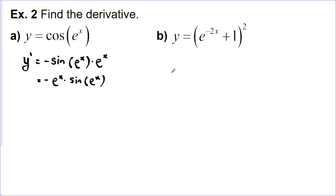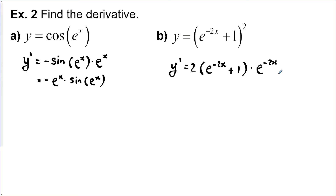This one requires the power rule first: bring the two down, leave everything inside the brackets alone, and reduce the exponent by one. Then take the derivative of the inside: the derivative of e to the negative 2x is e to the negative 2x times the derivative of negative 2x, which is negative 2. We can reorder to get negative 4e to the negative 2x times what's inside the brackets.